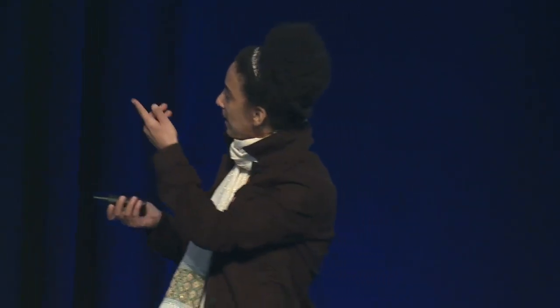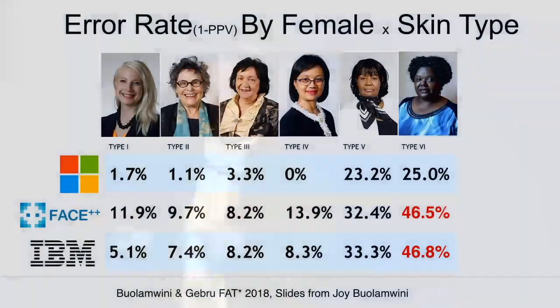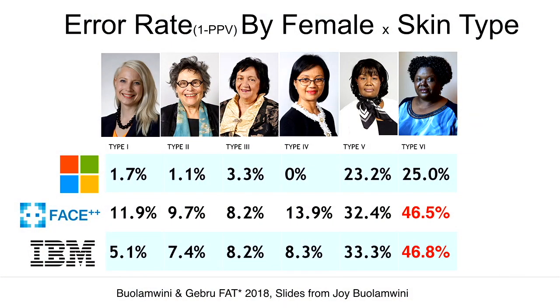And as someone's skin type gets darker and darker, for women you can see that the classification approaches random chance. So if you flip a coin, it's like 50% accuracy.